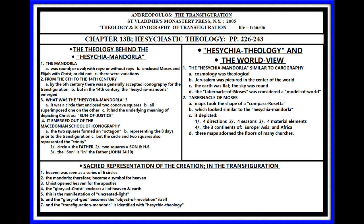What was unique about it is that this cartography emerged about the same time as the Hesychia Mandala — they emerged around the same time. It was a symbolic representation of the creation: four directions, four seasons, four material elements, and the three continents of Europe, Asia, and Africa. Let's move on to Block Three and take a look at the sacred representation of the creation in the Transfiguration.